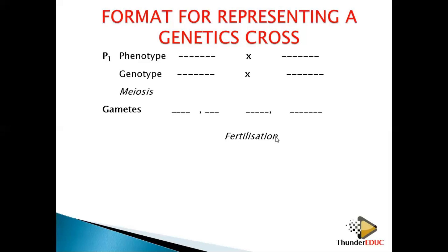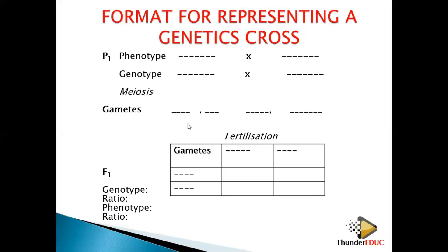After fertilization you get the F1 — the first filial generation — and then you get the phenotype of the F1. After that you need the genotypic ratio or phenotypic ratio. You use the genotype — the description of an organism in terms of genes — to obtain the phenotype. Writing meiosis and fertilization also earns you a tick; if you don't write it, you lose that mark.